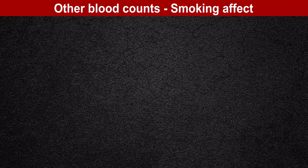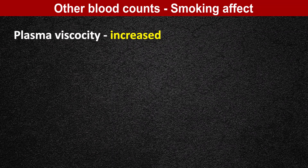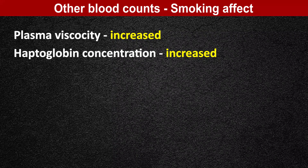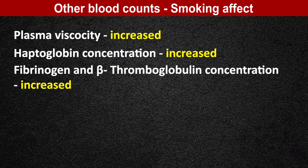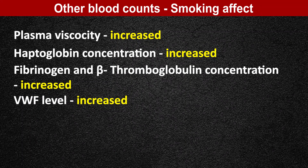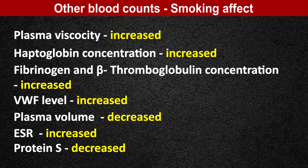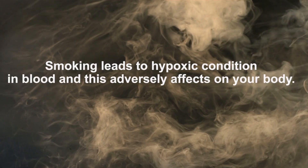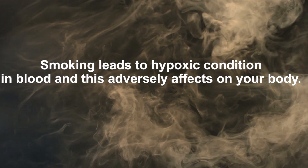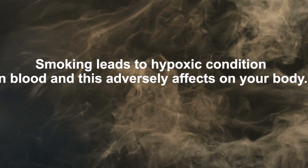In addition to these full blood count parameters, other blood markers may also be affected by smoking. These include increased plasma viscosity, increased haptoglobin concentration, increased fibrinogen and beta-thromboglobulin concentration, increased fibronectin level, and decreased plasma volume. Therefore, ESR is increased and protein is decreased. Smoking leads to a hypoxic condition in the blood, which adversely affects the body.